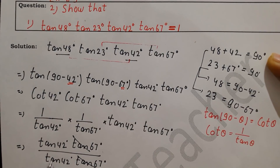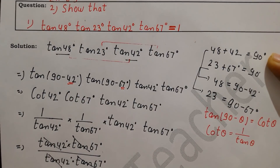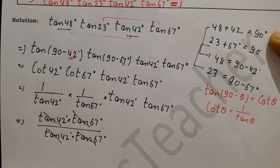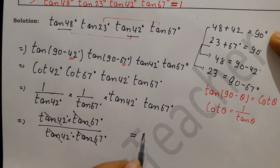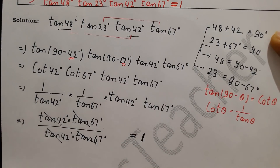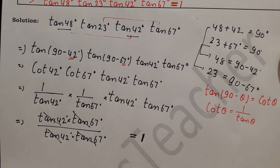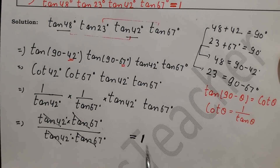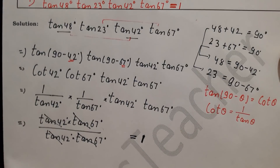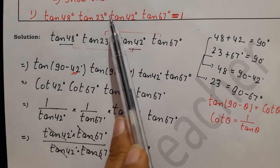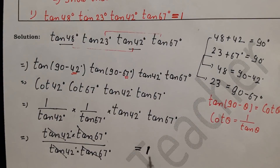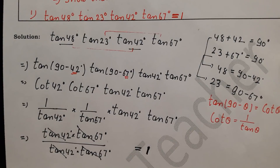So tan 67° cancels with tan 67°, and tan 42° cancels with tan 42° — they cancel because they are in a multiplicative relation. So how much is the answer? 1. Many kids cancel everything and think nothing is left so the answer is 0, but 1 times 1 divided by 1 is 1. We had to show LHS equals 1, and indeed the answer is 1.